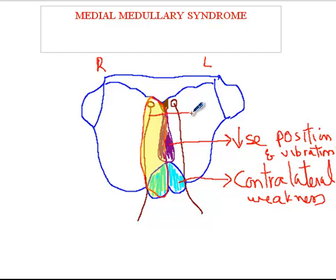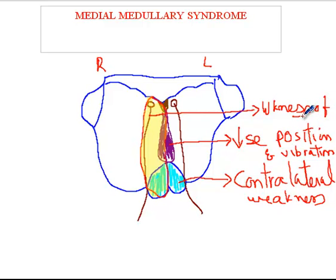Then you have the 12th nerve — the hypoglossal nerve — involved. It will cause ipsilateral, that is the same side, weakness. If the stroke is on the right side, it will cause right-sided weakness of the tongue. When someone's tongue is weak, if you ask them to protrude the tongue, the tongue will deviate to the side of the weakness. If you look at it at rest, you will see some deviation to the contralateral side. So that is something to remember.